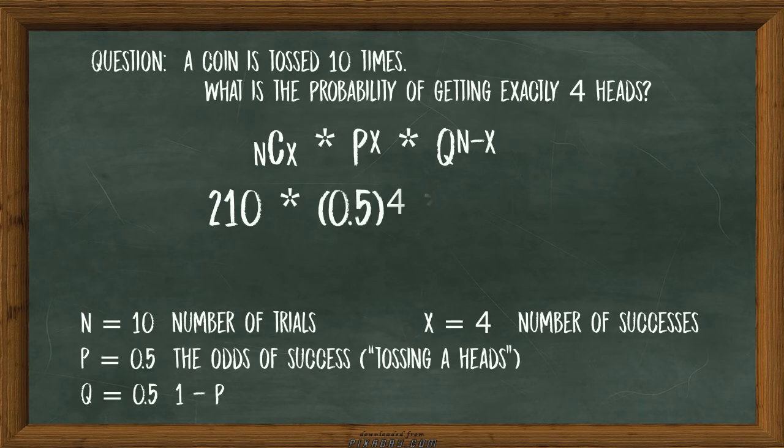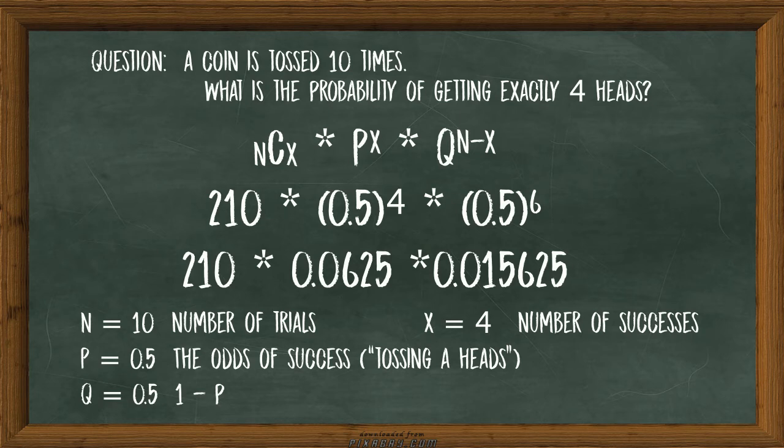So a coin is tossed ten times, what is the probability of getting exactly four heads? Using a combination calculator to get the first figure, 210, I multiplied out the rest and plugged in the numbers.